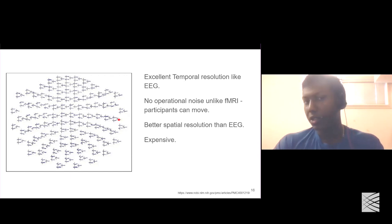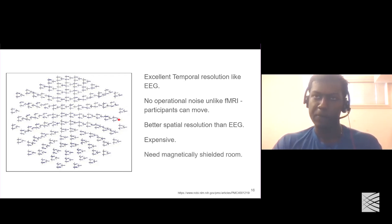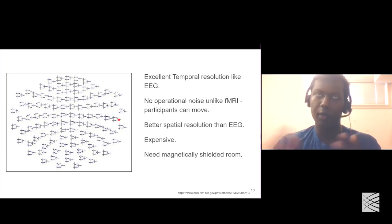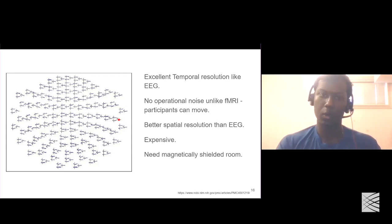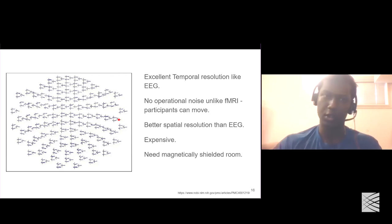One of the cons of MEG is that the devices are expensive — you need a lot of money to have one, whereas EEG devices are fairly cheaper. Another consideration is that you need a magnetically shielded room. Since these magnetic fields are at a very low magnitude, the Earth's magnetic field can cause interference during recording, so you need the shielded room to block it out.